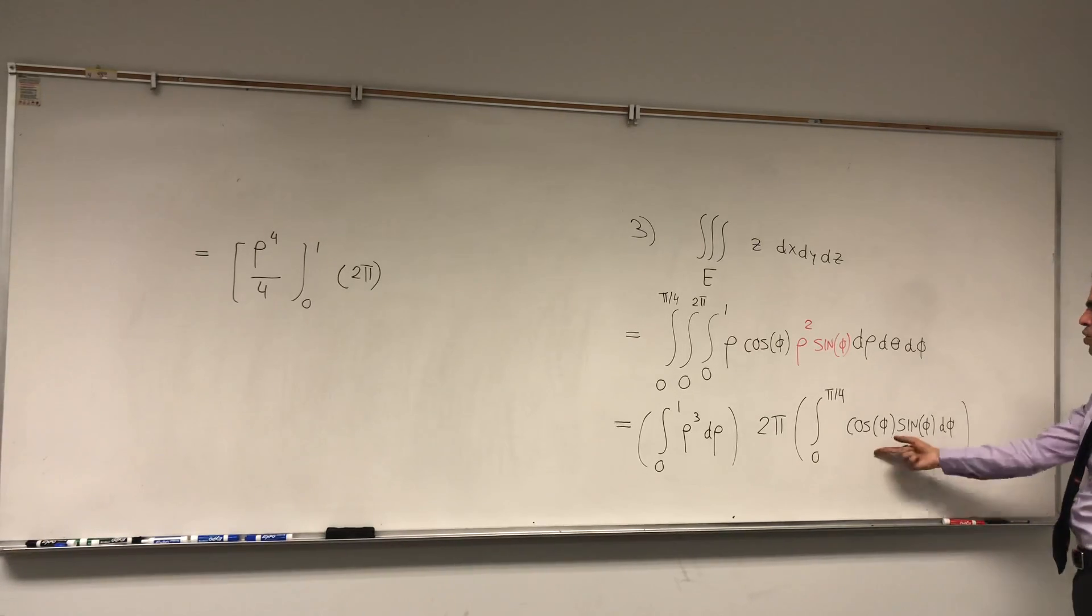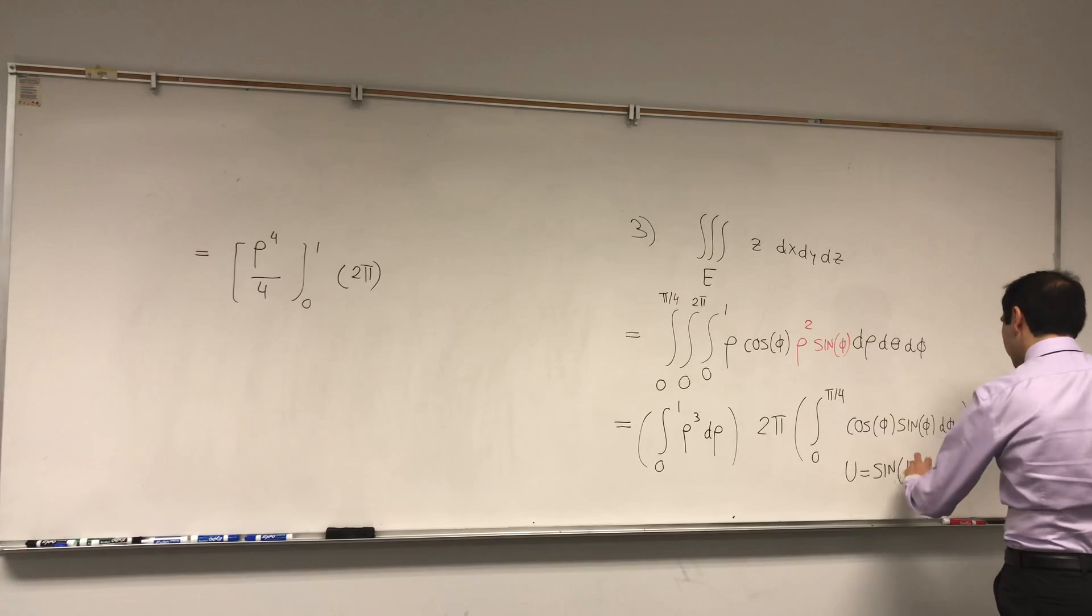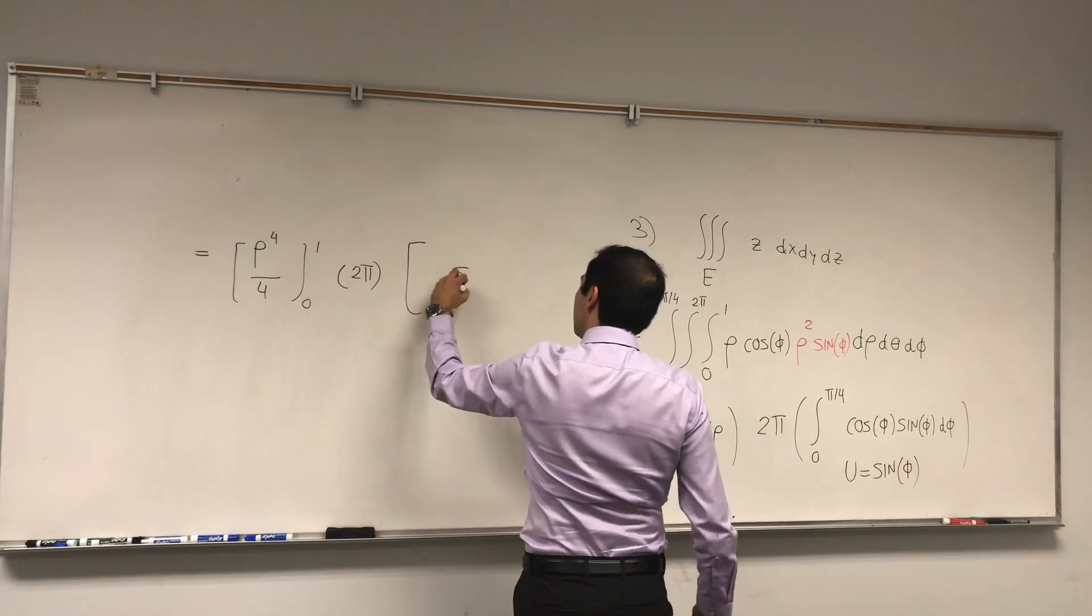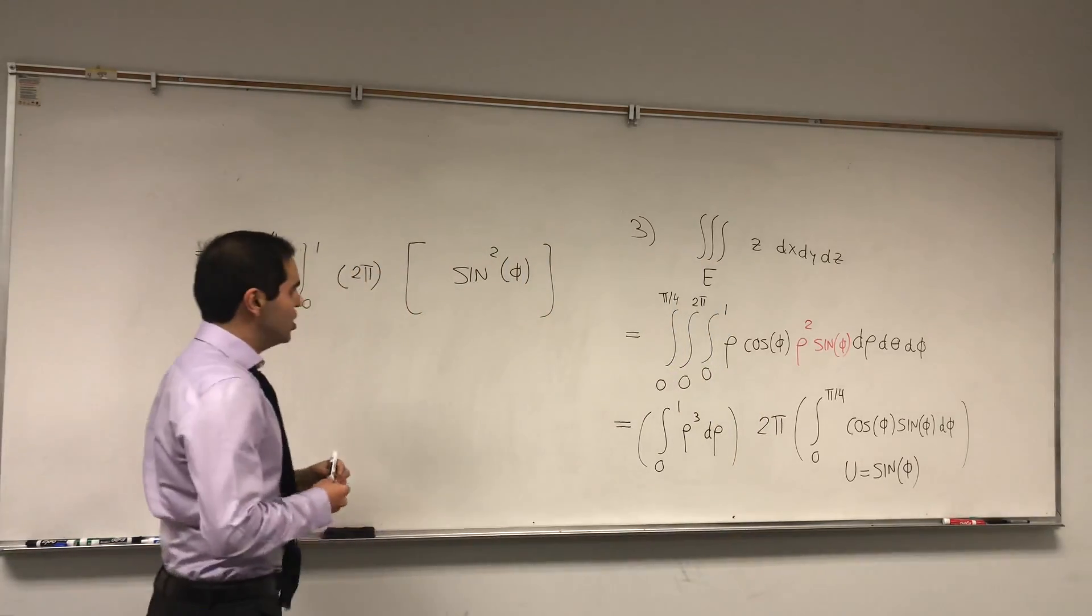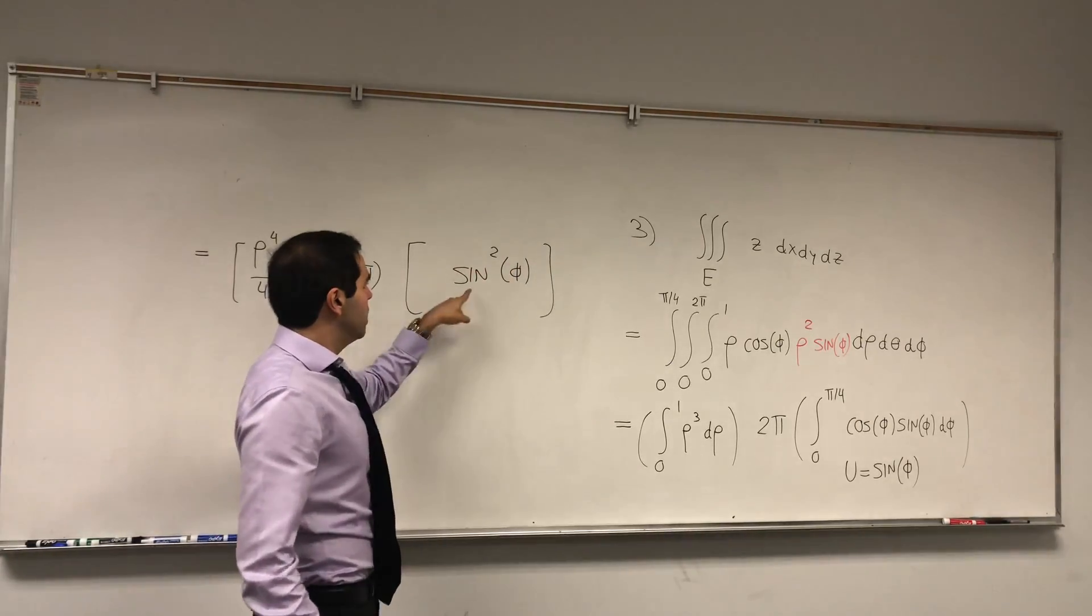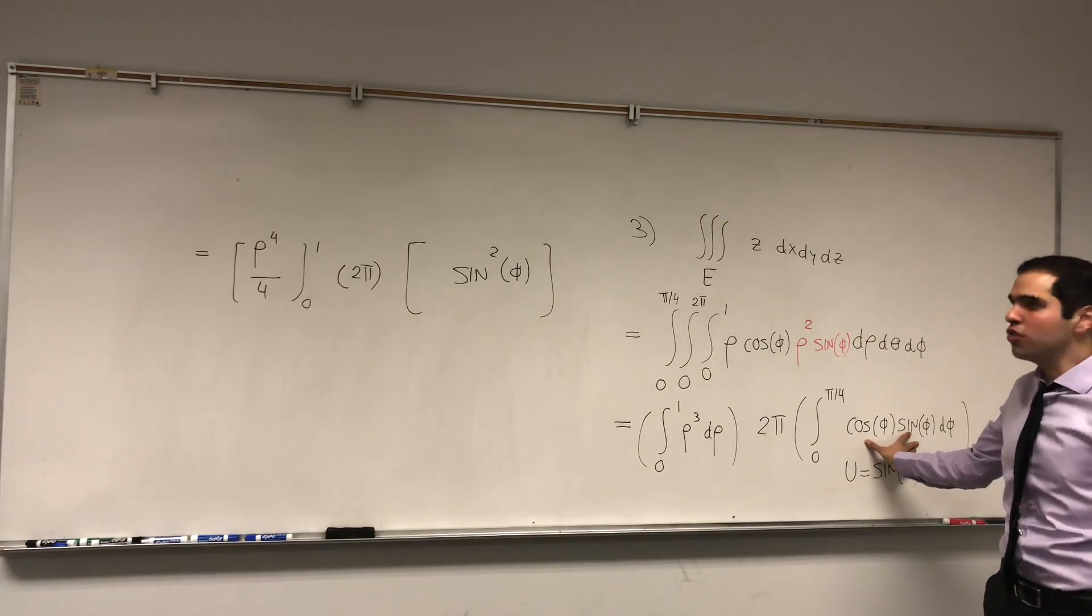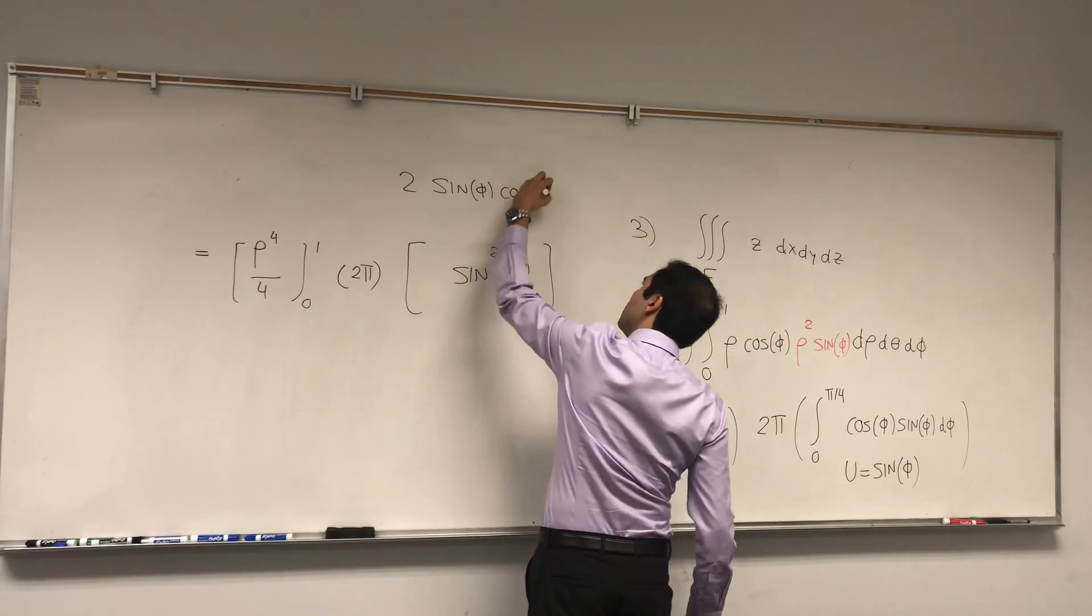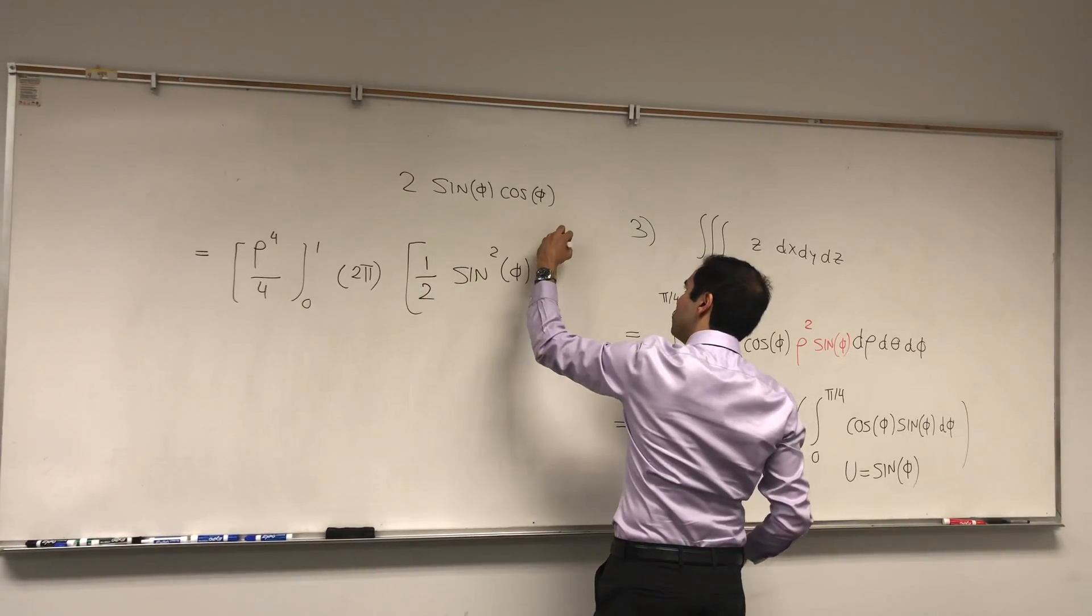If you want, use the u sub, u equals cosine, or u equals sine. I think u equals sine would be easier. Or, if you think about this, it almost looks like the derivative of either cosine phi or sine of phi. Sorry, it's cosine squared or sine squared of phi. Well, if you differentiate that, you get 2 sine of phi times cosine of phi, which is the expression here, except for a factor of 2. So again, you would get 2 sine of phi cosine of phi. Well, to get rid of the factor of 2, just divide by 2. So it's 1 half from 0 to pi over 4.